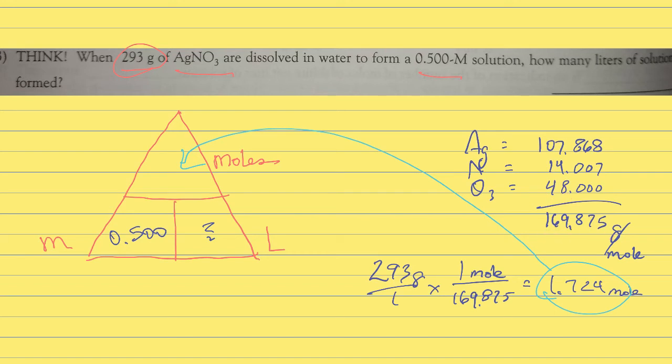That's how we get 169.875 grams per mole. Then we take the number of grams given and divide by 169.875. I already did that part of the math for you - we get 1.724 moles.